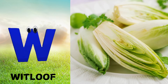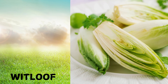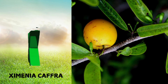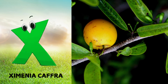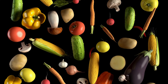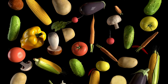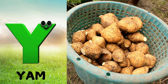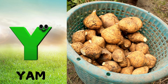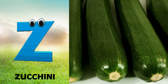X is for zymenia calf, zuh, zymenia calf. Y is for yam, yuh, yam. Z is for zucchini, zuh, zucchini.